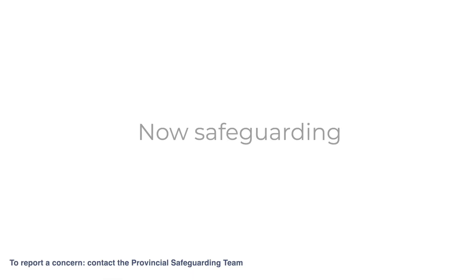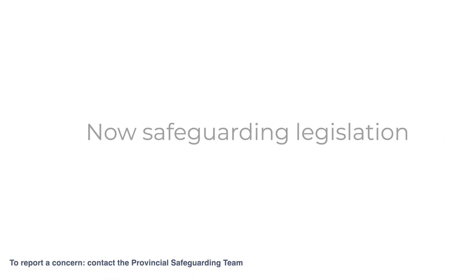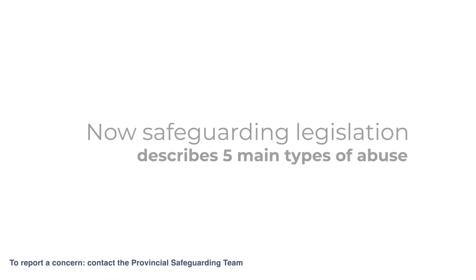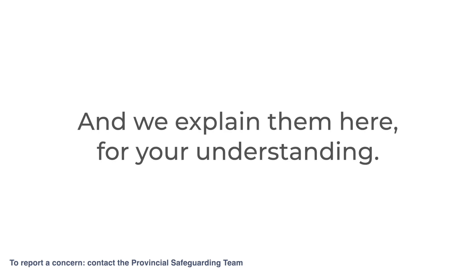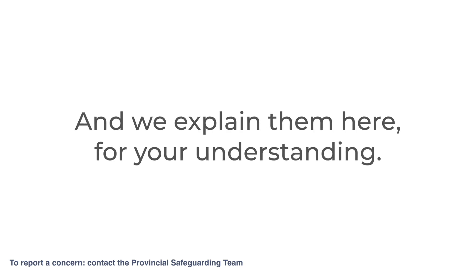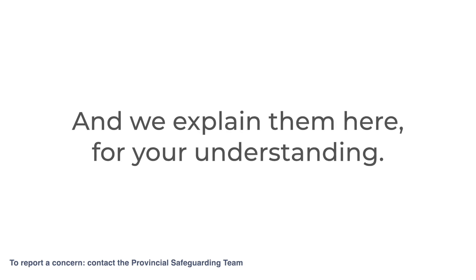Safeguarding legislation describes five main types of abuse, and we explain them here for your understanding.